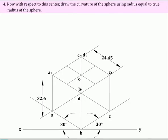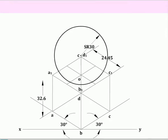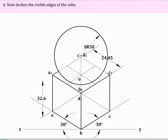With respect to this center, draw the curvature of the sphere using a radius equal to the true radius of the sphere. As the sphere is the topmost solid, it will be fully visible — make it dark. Now darken the visible edges of the cube. A portion of the cube blocked by the sphere will be hidden.